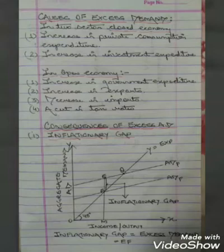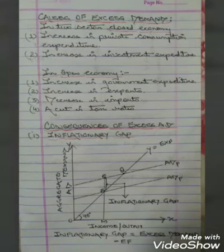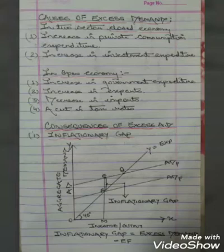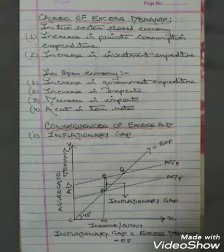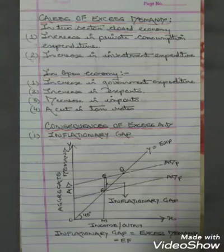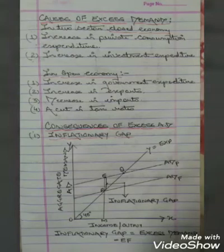In an open economy, the first reason for increased demand is an increase in government expenditure — the government expanding spending to fulfill commitments for development and welfare projects. The second is an increase in exports due to low domestic prices relative to international prices, meaning sellers get better prices in international markets. Third, a decrease in imports due to high international prices compared to domestic prices generates more AD. Finally, a cut in tax rates leaves higher disposable income with people, so they generate more AD.